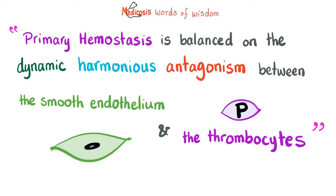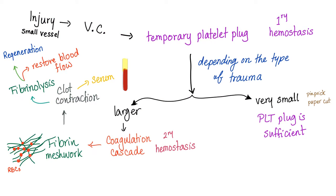Primary hemostasis is balanced on the dynamic harmonious antagonism between the smooth endothelium, which wants blood flow, and thrombocytes, which favor clotting. Here is the scenario: injury, vasoconstriction, temporary platelet plug — and depending on the type of trauma, if it's very small, the platelet plug is sufficient. If it's larger, we need secondary hemostasis, the coagulation, to form a fiber meshwork that will trap the red blood cells, then the clot contracts and serum is produced.